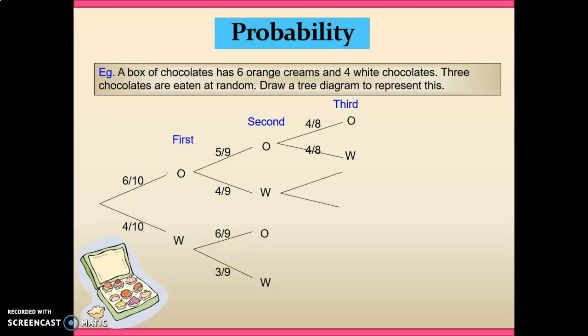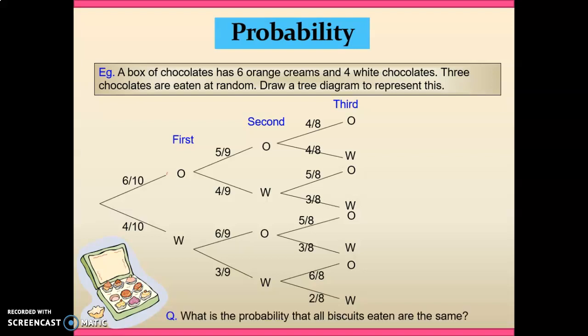Now continuing on and building up our tree diagram here, you can see that using the same logic, we can actually work out how many orange and how many white chocolates are left. And we put those down as fractions along the tree diagram. Having done this, we can actually answer questions in regard to it.